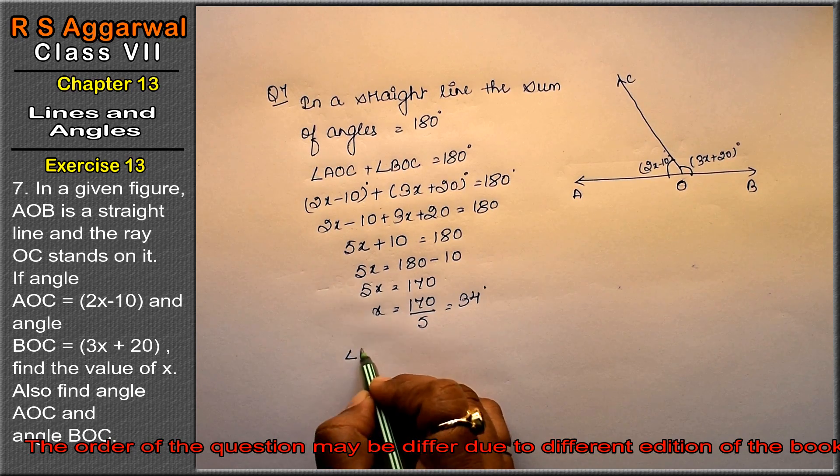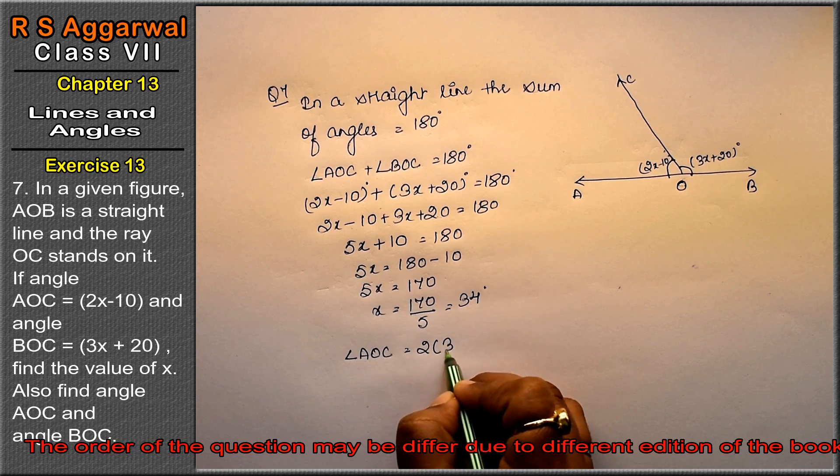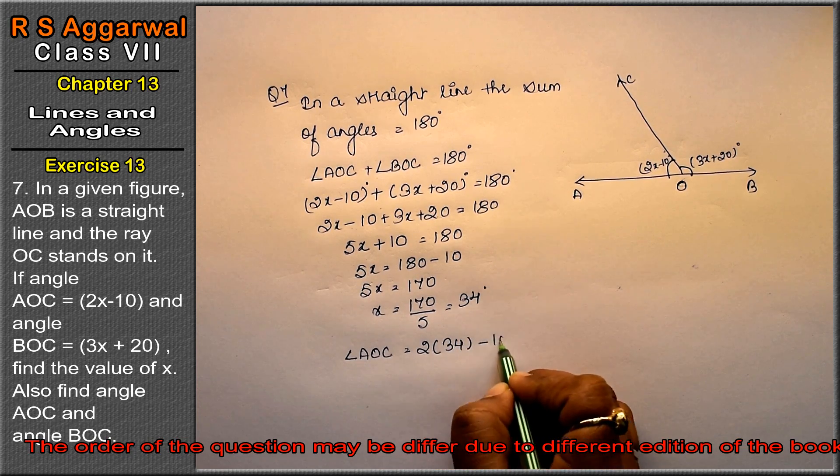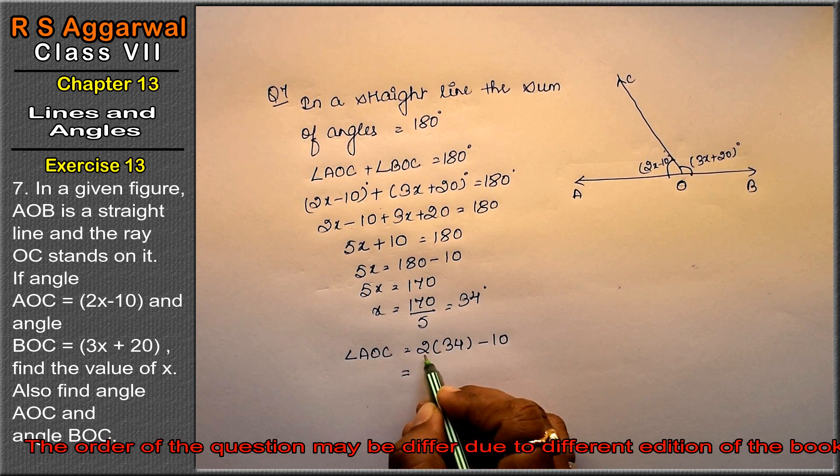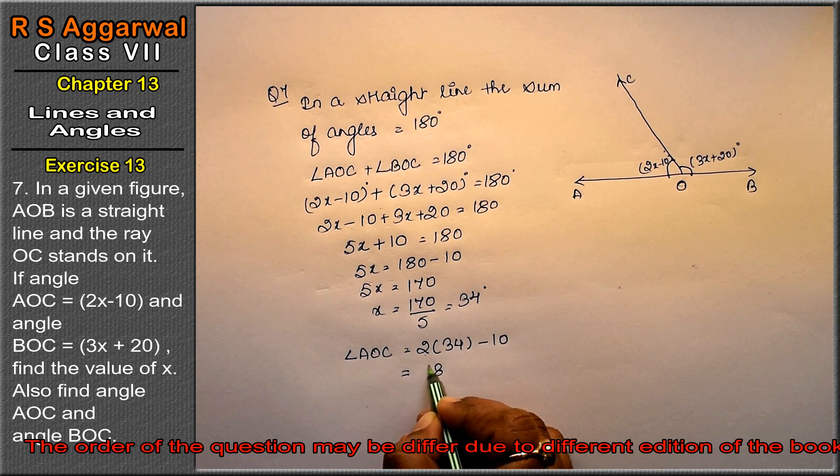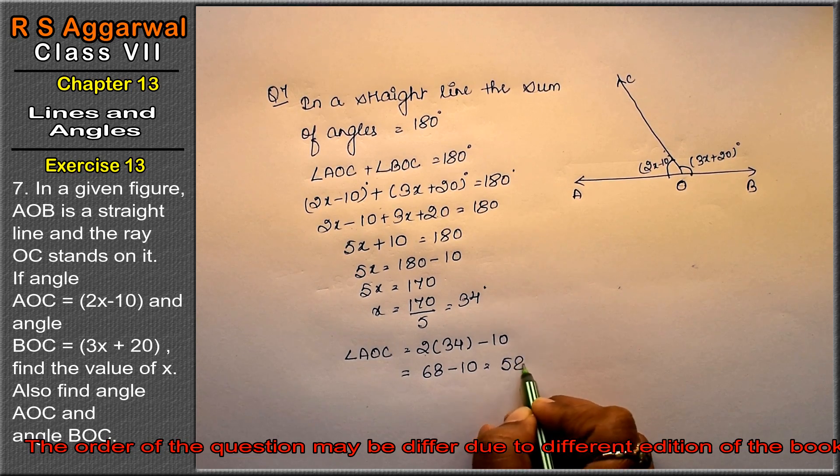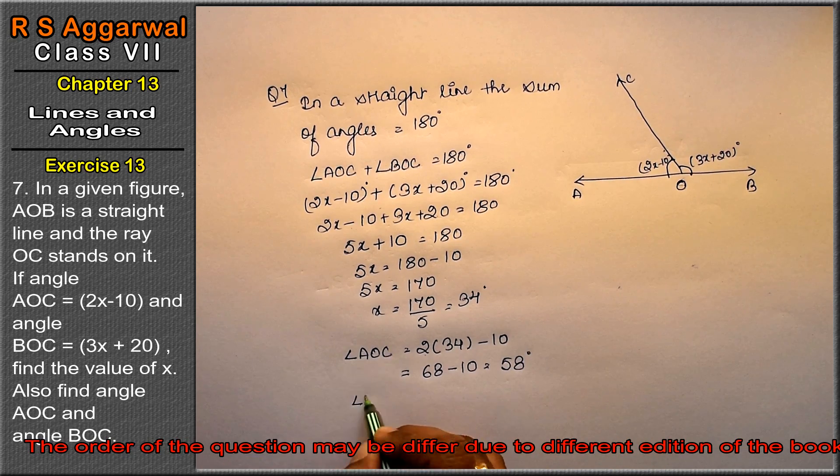How much is angle AOC? This is 2x. I write 2 times 34 minus 10. How much is this? 2 fours are 8, 2 threes are 6 minus 10. That is 58 degrees.